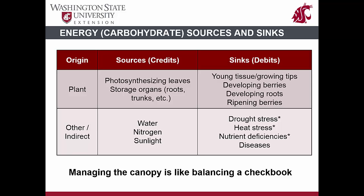There are other resources that can influence vine development and therefore could be considered as indirect sources and sinks in a growing vine. Water, nitrogen, and sunlight are all required for vine growth. When supplies are insufficient, the vine has a reduced capacity to build and store energy. When in surplus, energy is given to all sources to encourage growth. Heat stress, drought stress, diseases, and nutrient deficiencies can hinder the plant's ability to produce and store energy, and therefore reduce energy available to sinks.